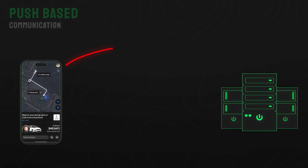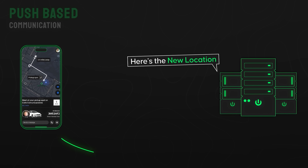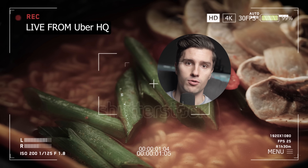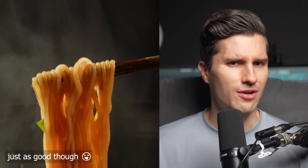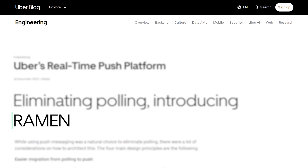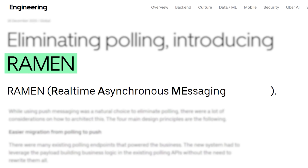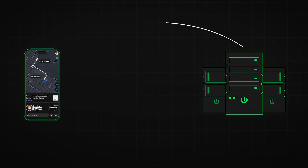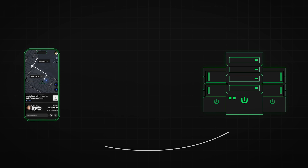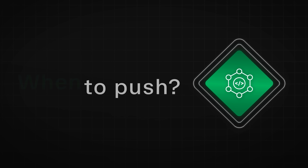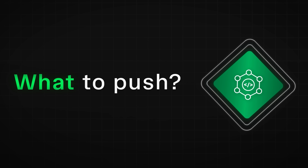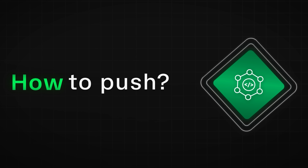As a result of these polling problems, Uber moved to a push-based communication approach. Instead of the client asking for new data, the server now pushes it to the client once it's available. For that, they created RAMEN — which stands for Real-time Asynchronous Messaging Network. In theory this works much better, but still comes with challenges around deciding when to push, what to push, and how to push data to the client.